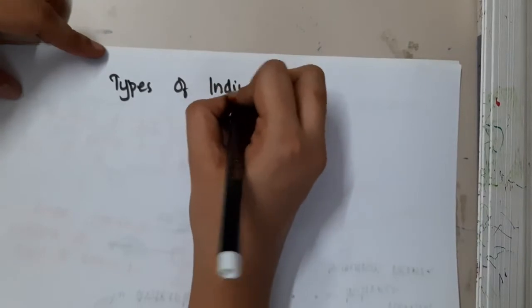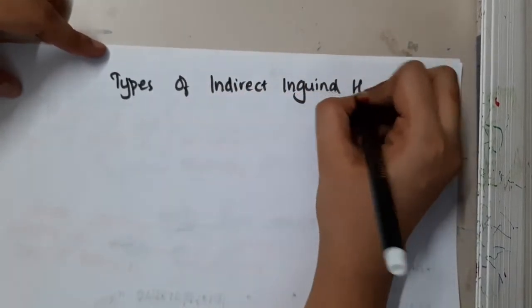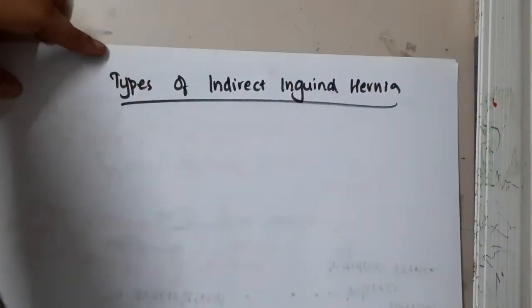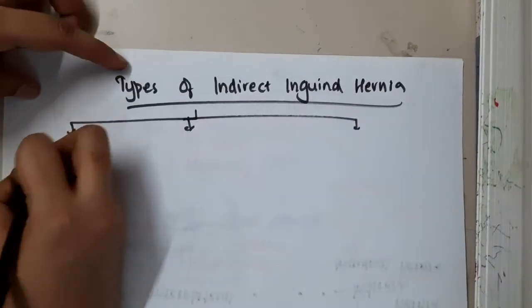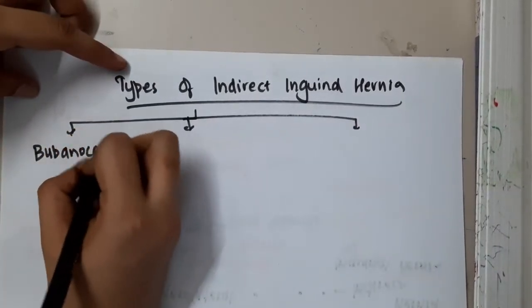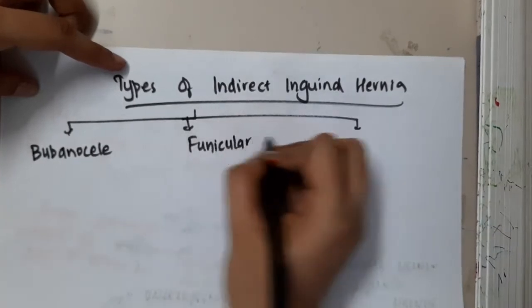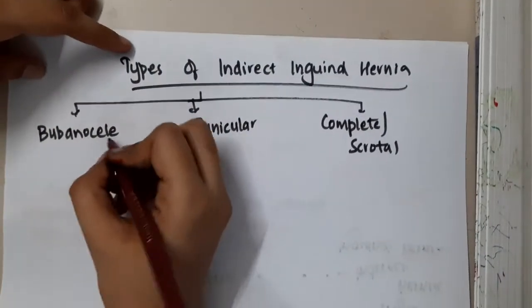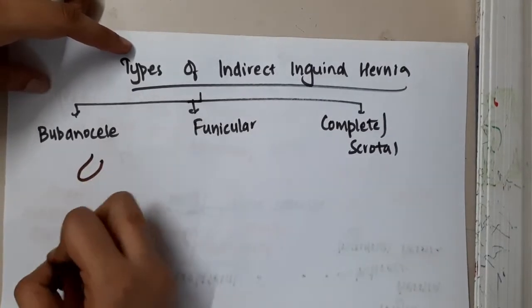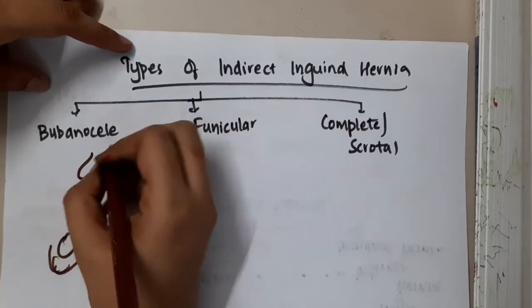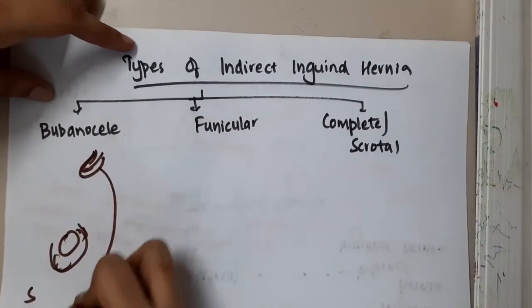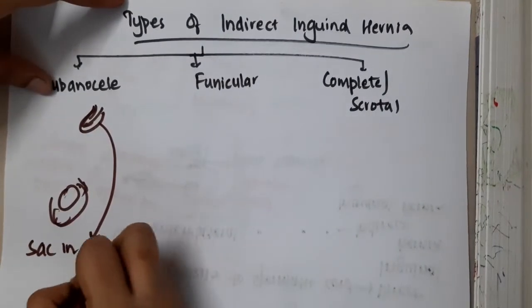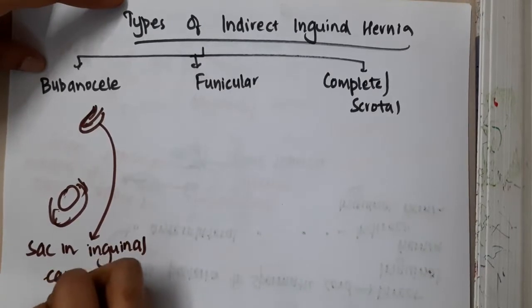We have learnt about direct and indirect hernia. Now let us learn the types of indirect inguinal hernia. Indirect inguinal hernia is divided into three types: bubonocele, funicular, and complete or scrotal. In bubonocele, the sac is present in the inguinal canal itself — the sac does not descend beyond the inguinal canal.